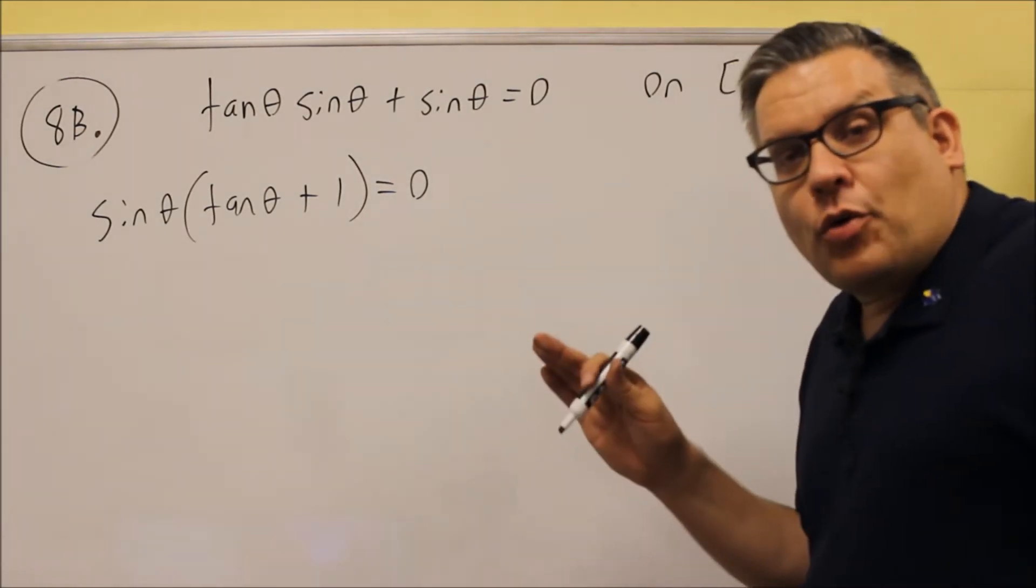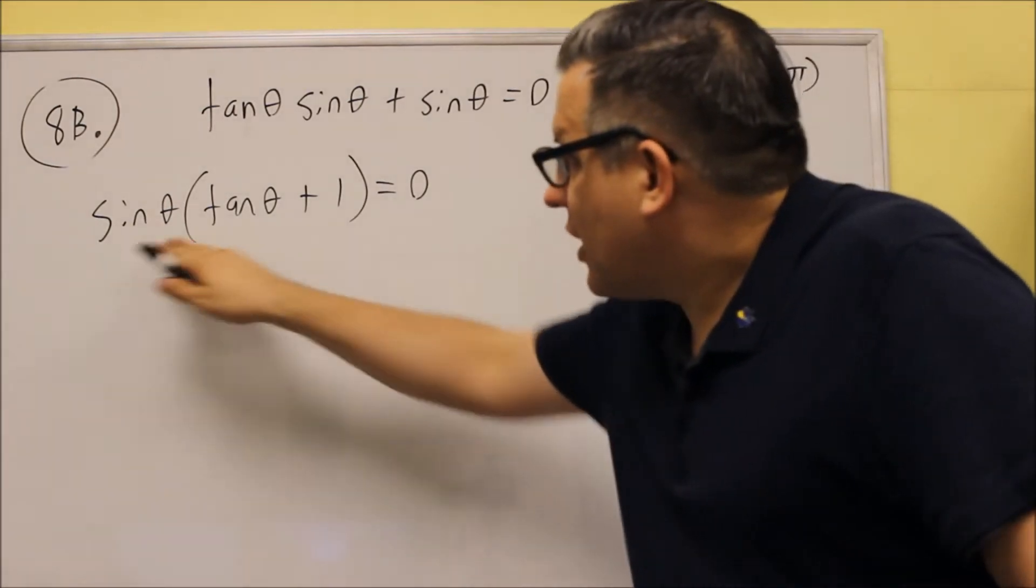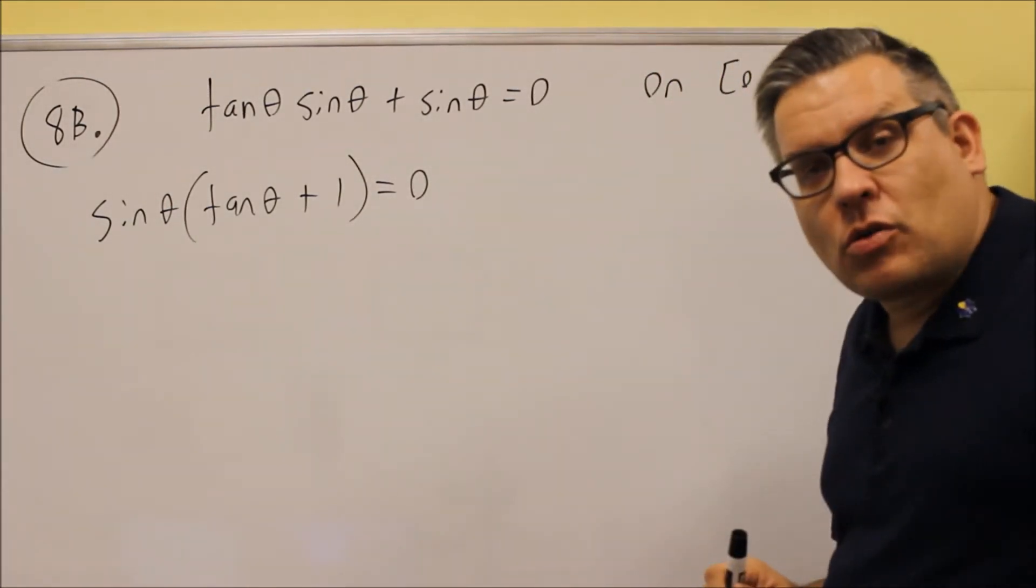Like the problem we did before in 8a, because it's set equal to 0, we'll use the zero product principle, and we'll take each of these individually and set them equal to 0.